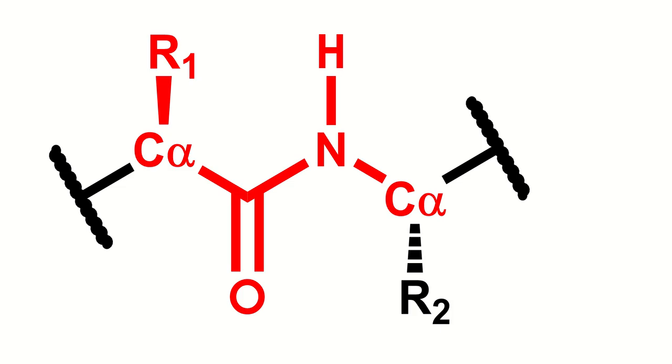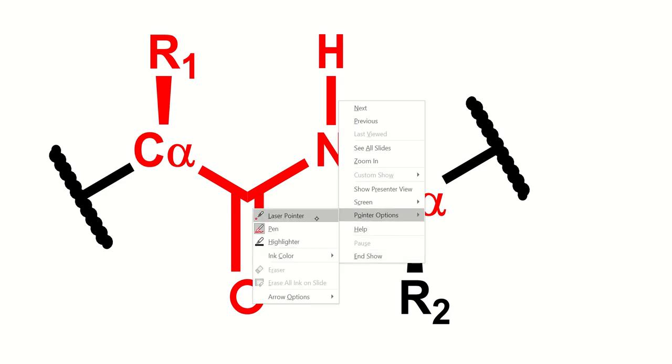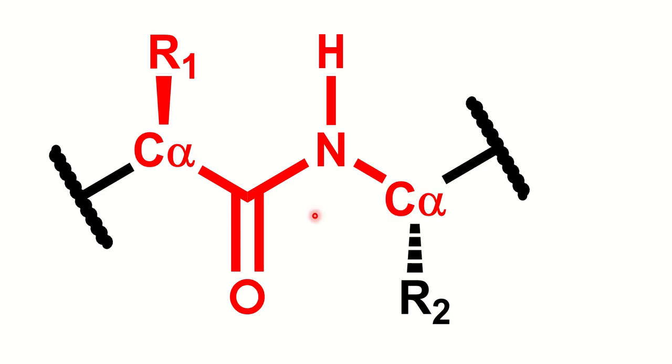What we're going to look at in this video is how specifically the covalent linkage between amino acids, that is the peptide bond, is important for the three-dimensional structure of the protein.